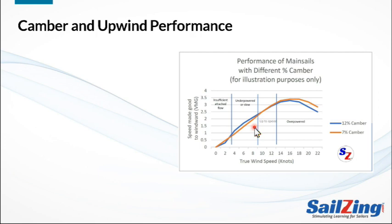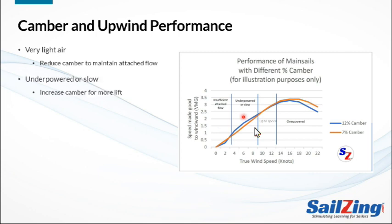Let's look at four regions of the graph, based on wind speed, which will vary for different boats and crew weights. In very light air, the fuller sail may have trouble retaining attached flow, and so the flatter sail may perform better. In the next region, you are seeking more power either to accelerate your boat or to get it up to its maximum speed; here the fuller sail performs better. In the third region — up to speed — your boat is near its maximum speed. Both sails are providing adequate lift, and you can experiment with flattening your sail to see if reduced drag gives you just a little better upwind performance.